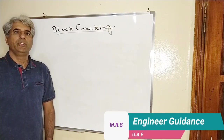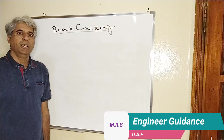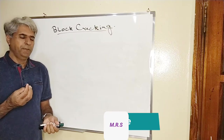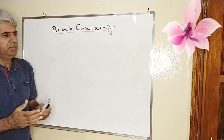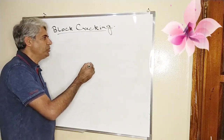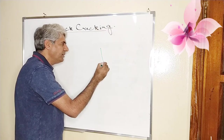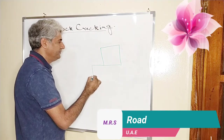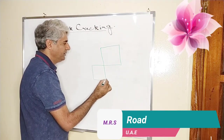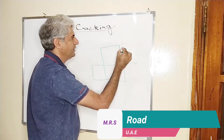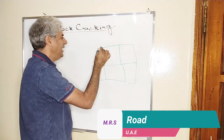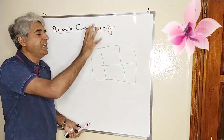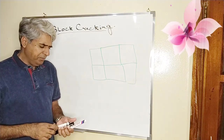Today we have to start another lecture about road failure regarding the cracking known as block cracking. This word shows block cracking means those types of cracks which are bigger in size, like the one drawn here. This pattern of cracking which you will see on the road is known as block cracking.